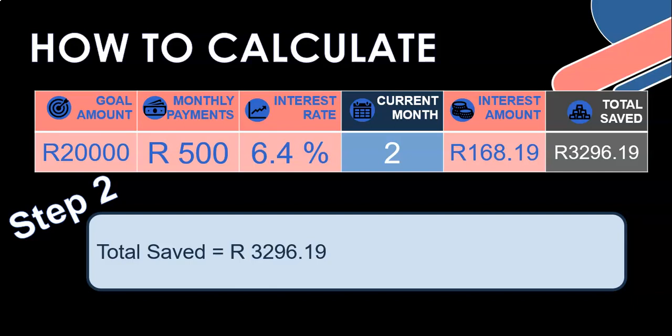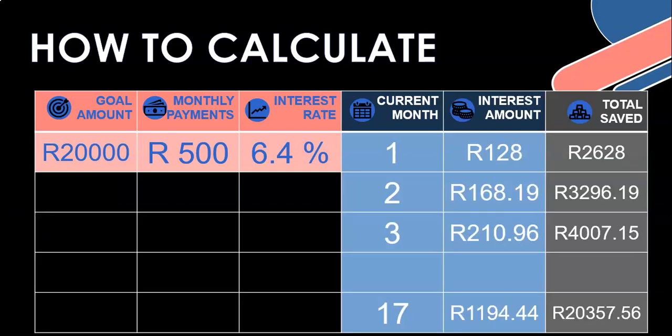It's accumulating a lot quicker than if we just put 2,000 Rand in and gave 500 Rand every month without interest. We're going to keep doing this whole process until we get to our goal of 20,000. I've worked out we're probably going to need about 17 months to get there. You can see how total saved is increasing every month, and at some point it'll get to 20,000 and that's when we will stop. Let's go see how we do this in Delphi.